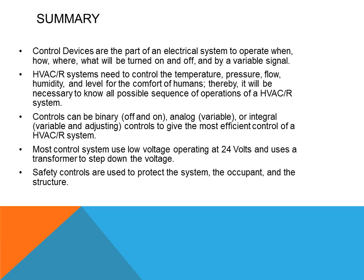To summarize this week's PowerPoint presentation: control devices are the part of the system that determine when, how, where, and what is to be turned on and off, and control the variable signals. HVAC systems need to control the temperature, pressure, flow, humidity, and level for the comfort of humans. It will be necessary to know all possible sequences of operation of any type of HVAC equipment, including air conditioning.